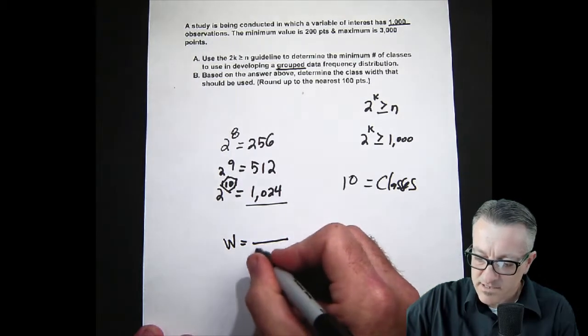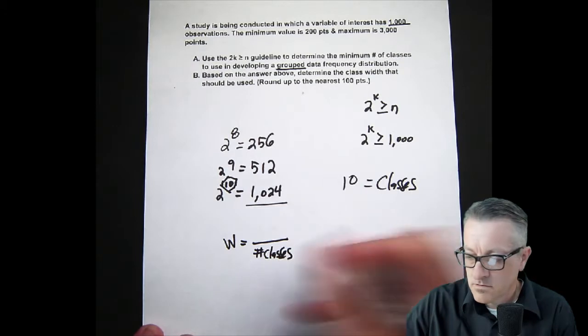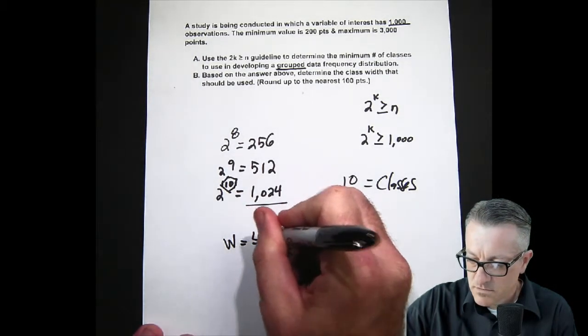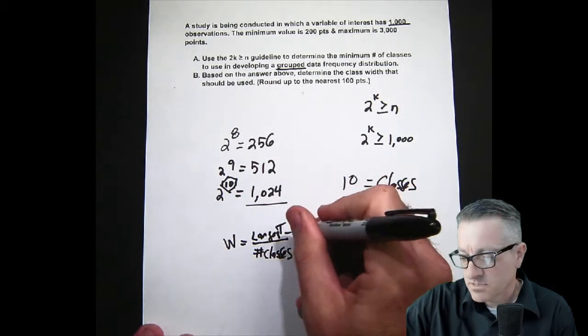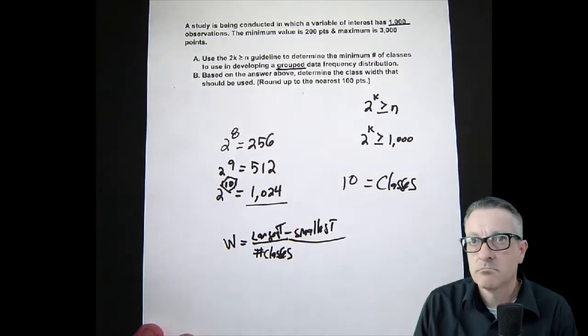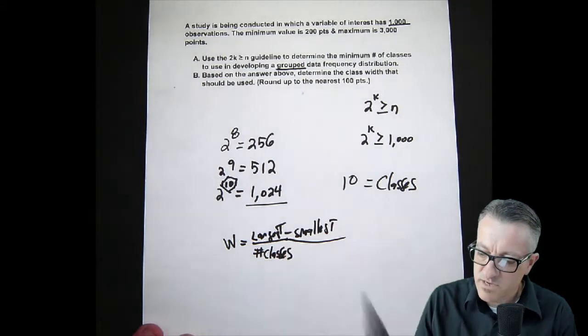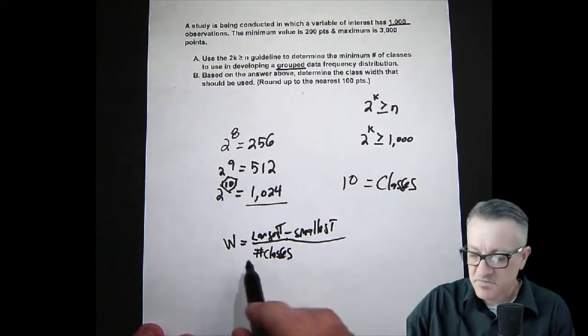And it's this right here. For the class widths it's W, and then we put down here the number of classes, and then the largest value subtract the smallest. Largest minus smallest, a little messy, but largest minus smallest divided by the number of classes gives us our class widths.